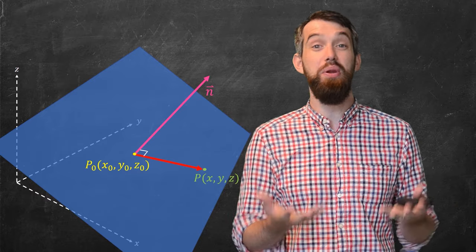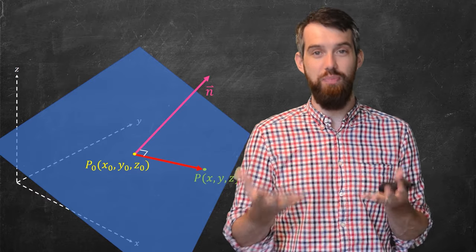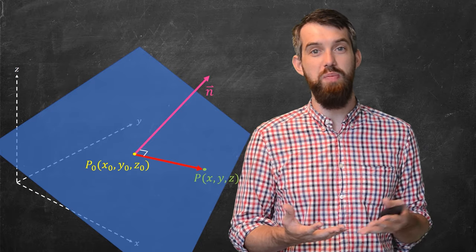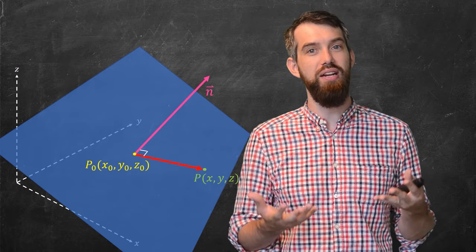So this normal, which sticks straight out of the plane, and this P₀ to P vector that lives in the plane, that those two vectors are going to be orthogonal or that their dot product is zero.